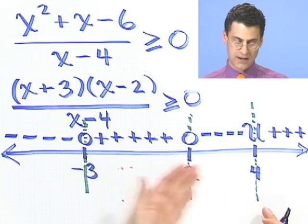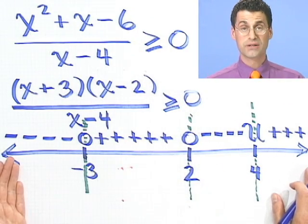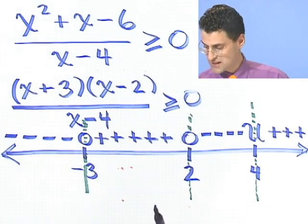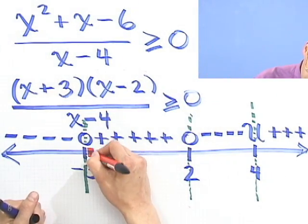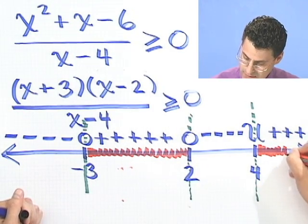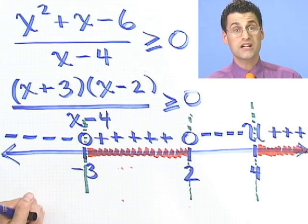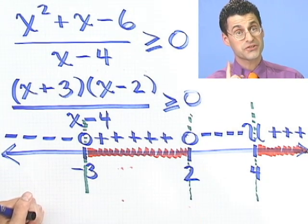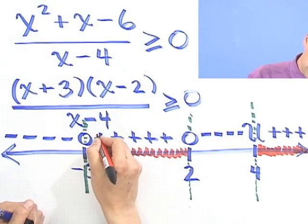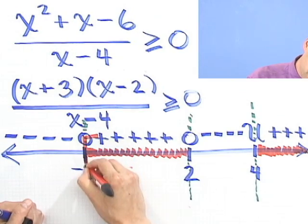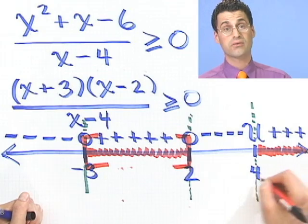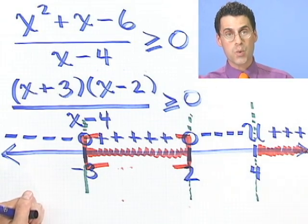So now I've created my sign chart here. I can read off my answer. I'm looking for where this thing is greater than or equal to 0. So where is it positive? Well, it's positive in this land, but it's also positive in this land. Am I allowed to equal 0? The answer is yes, I am because I see that little equal sign is there. So in fact, wherever I see a 0, I'm allowed to capture that. And so I capture that with these brackets. So those brackets mean I'm allowed to equal 0. And I should put the bracket here too, right? Because it's 0 there too.